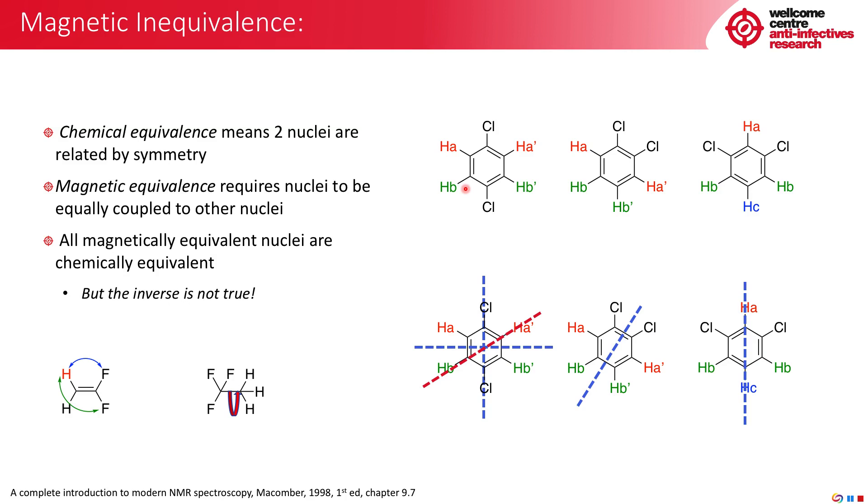You'll notice that although they couple to nuclei that appear equivalent, they don't actually couple to the same nuclei. So HA couples to HB and HA prime. HA prime couples to HA and HB prime. This means that these are magnetically inequivalent. So these protons are in fact not magnetically identical, although they are chemically equivalent. The same is true for the 1,2 isomer.